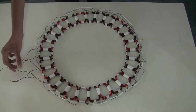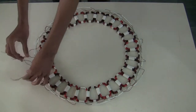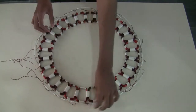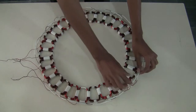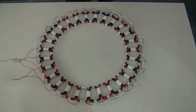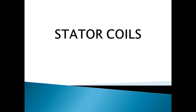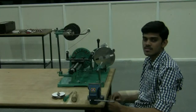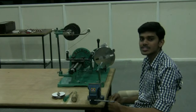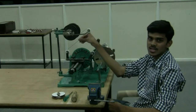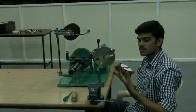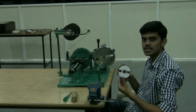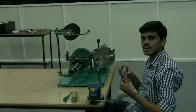As per our design, the stator consists of 9 coils per phase and all the coils of a phase are connected in series by soldering them and additionally insulating them with insulating sleeves. The machine you are seeing here is a winding machine which we are using to wind the stator coils. The copper wire used here is of 20 SWG. This is a former which we have designed as per our requirements. So let's start the winding.